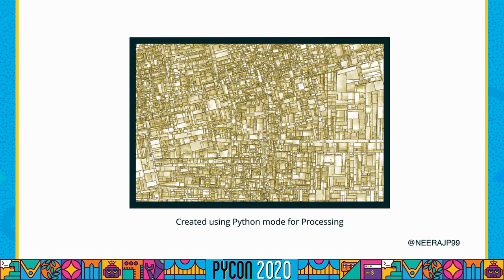In the previous slide we saw an art piece named Substrate by Jared Tarbell. Using the principles we discussed, we can create something similar. The idea is pretty simple — we start with some random points on the canvas, then draw lines in random directions, and as soon as these lines collide with each other, new lines start at an angle of 90 degrees. The exciting thing is the emergence of art is really different each time the program is run. This piece is created using Python and Processing.